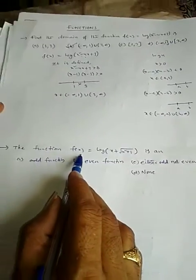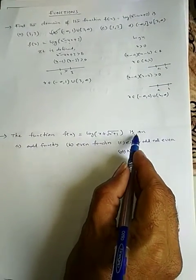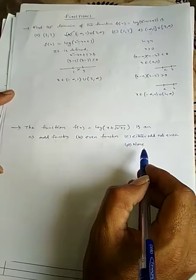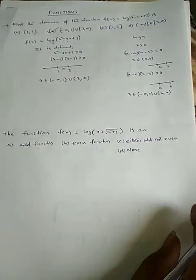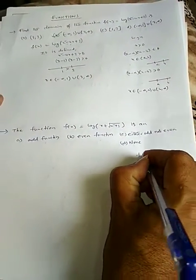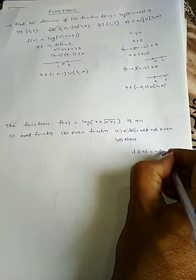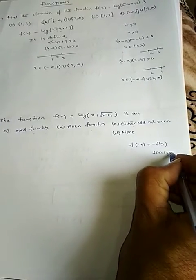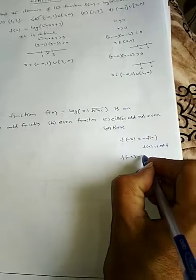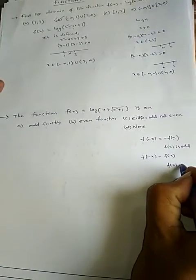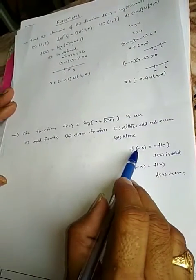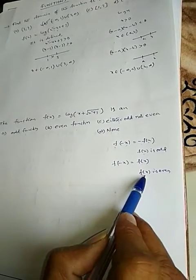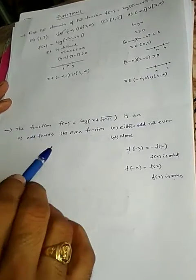The function f(x) = log(x + √(x² + 1)) is — odd function, even function, neither odd nor even, or none? To check: an odd function satisfies f(-x) = -f(x), and an even function satisfies f(-x) = f(x).